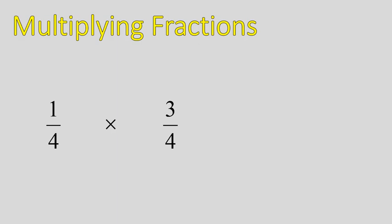With multiplying fractions, you multiply the top number times the top number and bottom number times bottom number. We call this the numerator times the numerator, that's the top numbers, and then the denominator times the denominator. So if we had one-fourth times three-fourths, I would have one times three on the top and four times four on the bottom, giving me a result of three over sixteen.